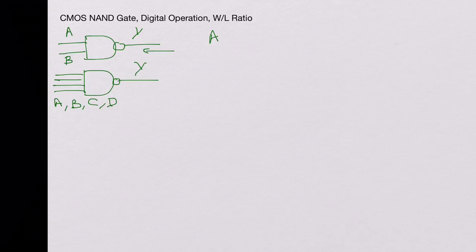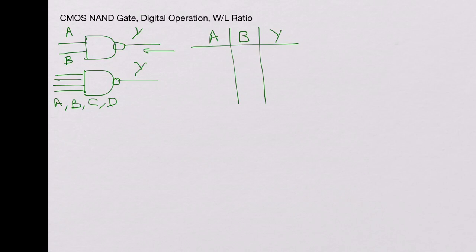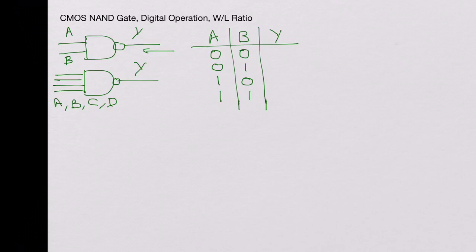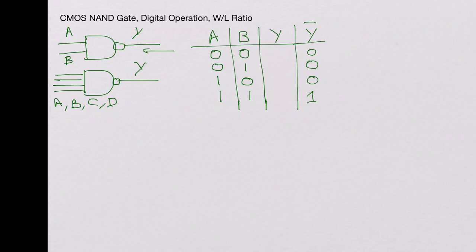If you write the truth table for the two-input NAND gate, we have inputs A and B and output Y. We have two combinations for each input, making four combinations total: A and B can be 0-0, 0-1, 1-0, and 1-1. The NAND gate is the basic gate from which an AND gate is constructed. The AND gate output is high when both inputs are high.